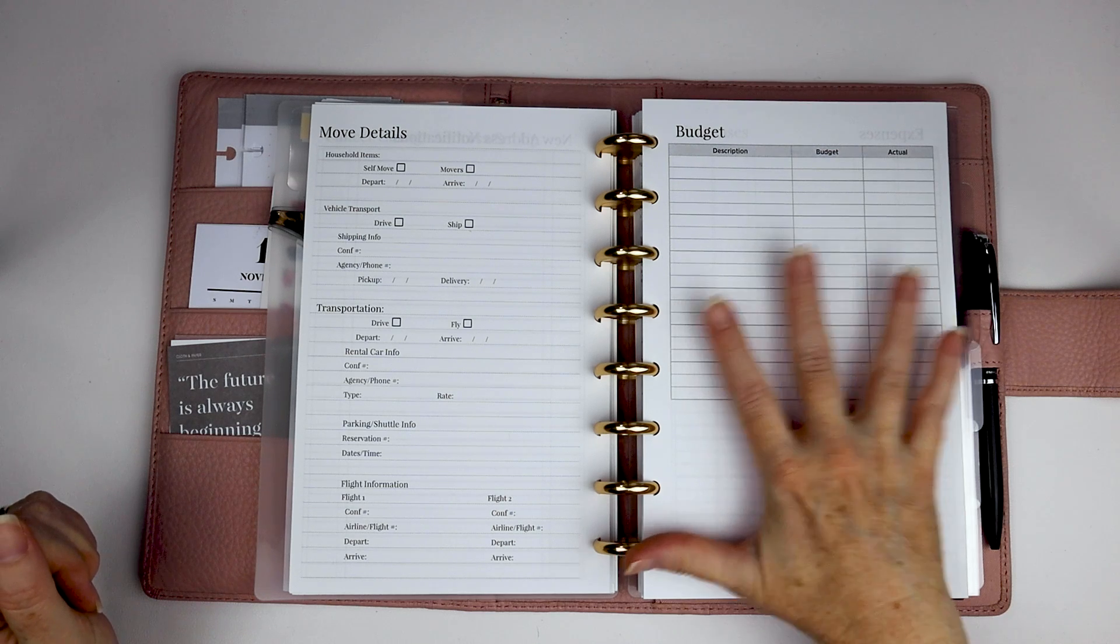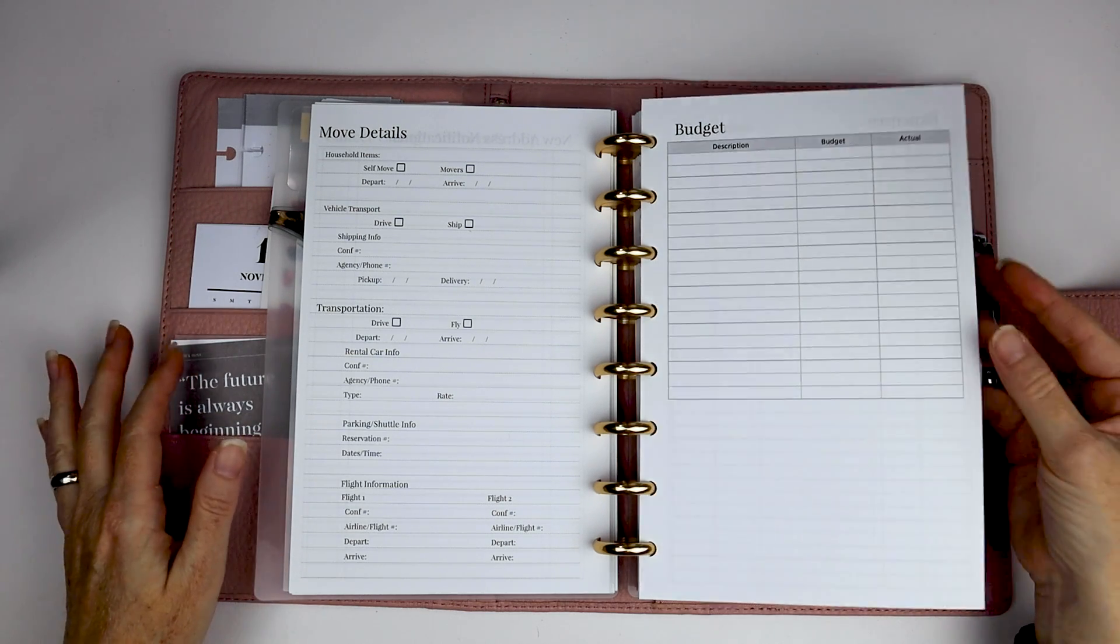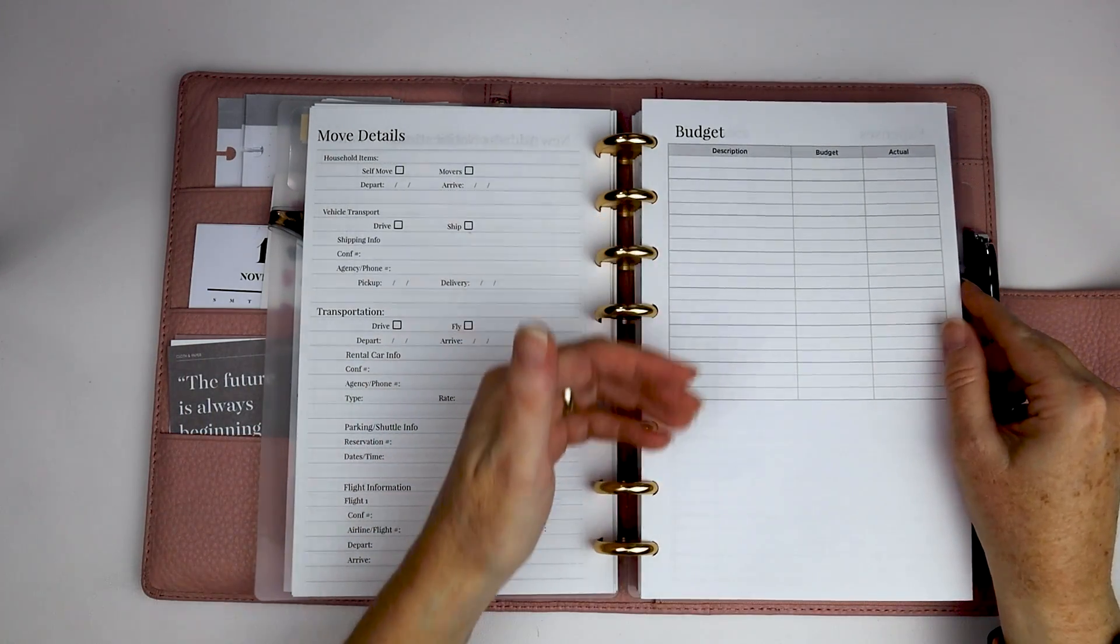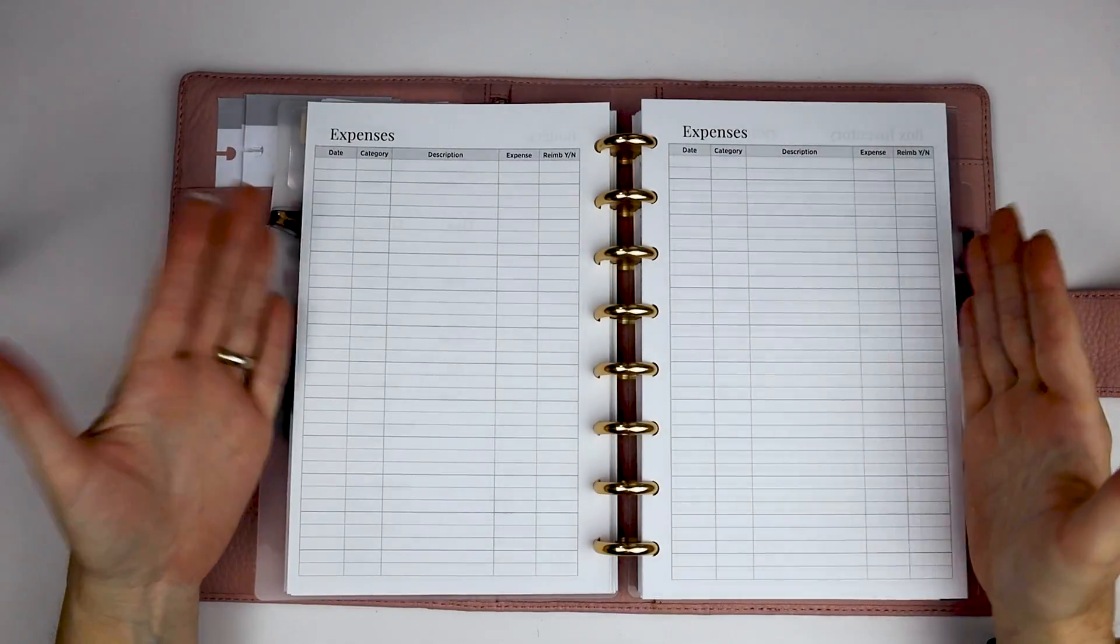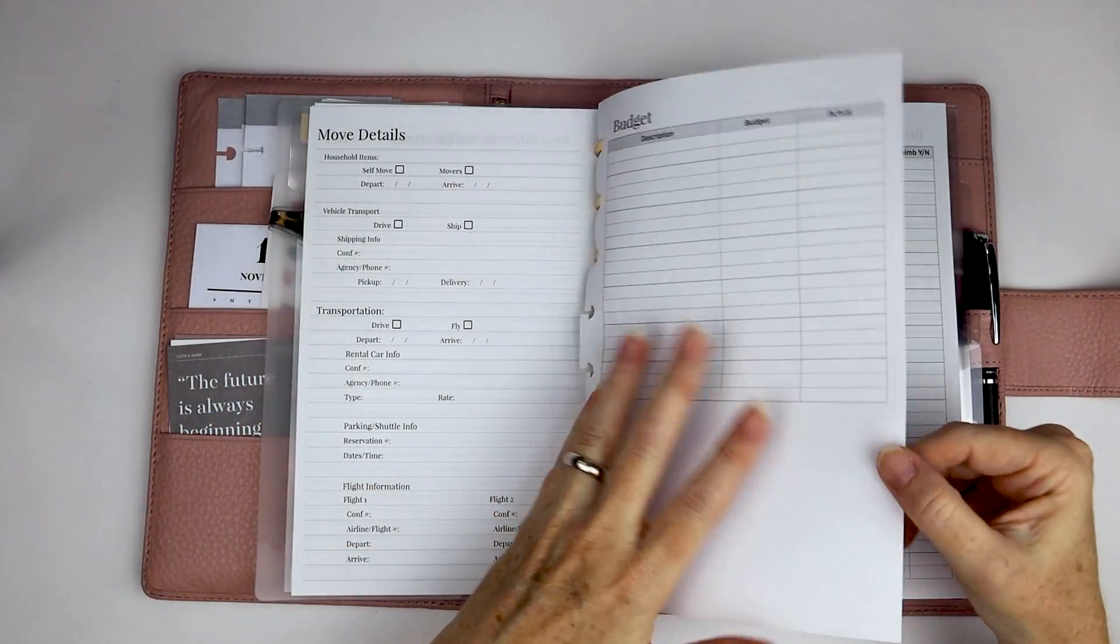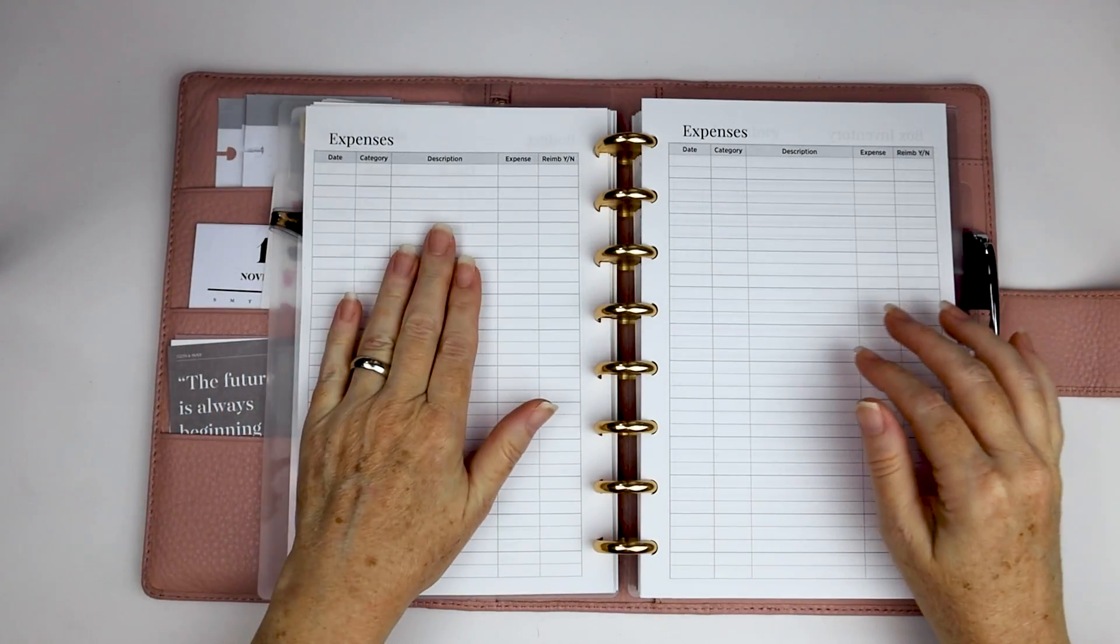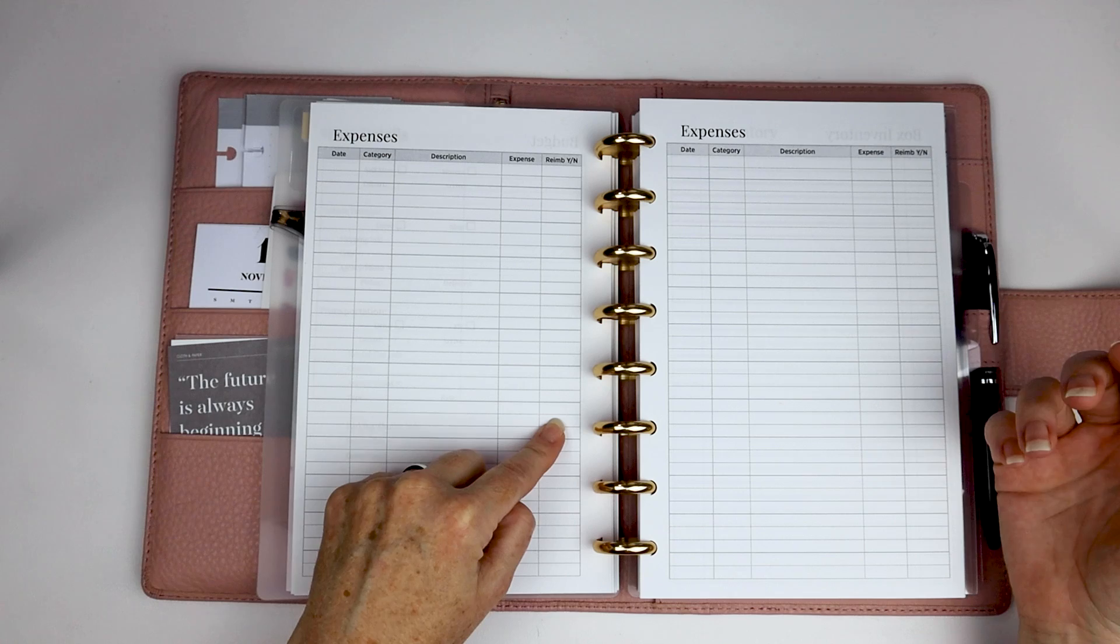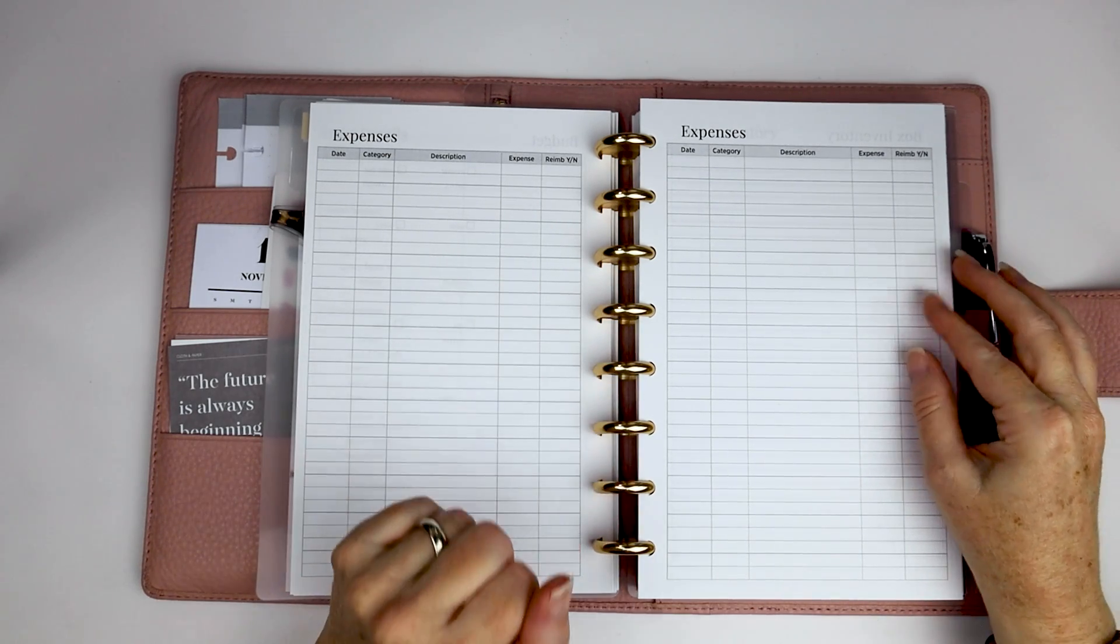The next page is a budget. Very simple. I didn't think it needed to be super complicated. But it is good to have a place for you to kind of quickly lay out how much you think a move is going to cost you. And then I have two pages for expenses, date, category, which kind of goes back to your budget description here. A spot for kind of what it was that you spent, what the amount is. And then if you are being reimbursed by a company, there's a spot for you to put like a yes, no, this is reimbursable.